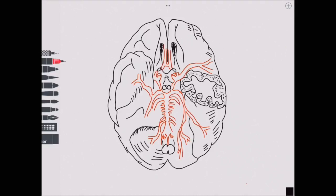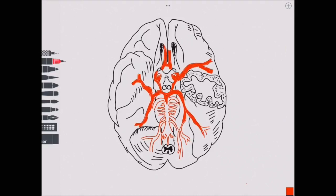To work out the likely symptoms, you first need to know the distribution of the artery in question — in this case the posterior cerebral artery — and secondly know the function of the areas of the brain it supplies.